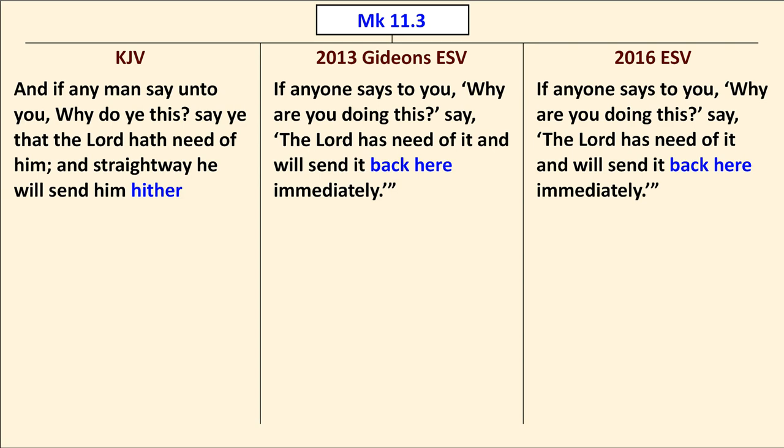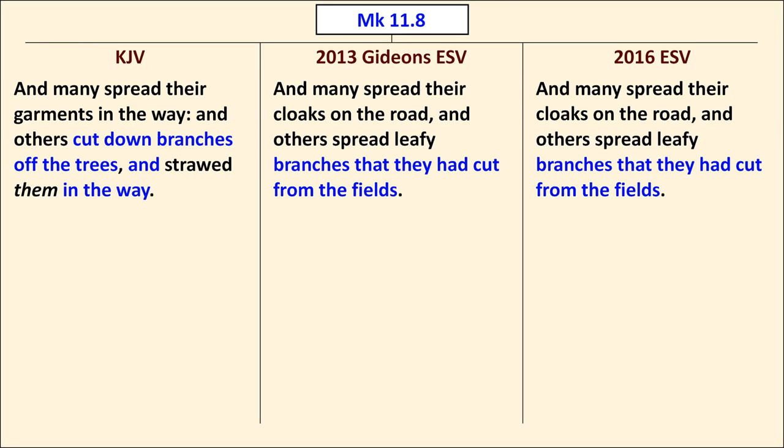Mark 11:3 really changes the sense of the verse. The King James Version says "The Lord hath need of him, and straightway he" — the colt owner — "will send him hither." But the Gideon's ESV and the 2016 ESV have it read that the Lord has need of it and will send it back here immediately — meaning the Lord will send the colt back to the owner. In Mark 11:8, there's a difference in whether branches are cut from trees (TR) or from fields, and the TR also mentions "the way," which the Gideon's ESV and 2016 ESV do not.